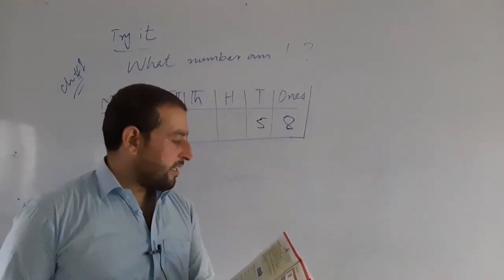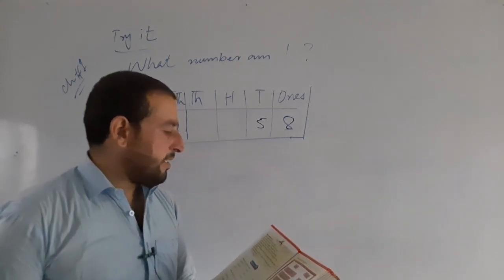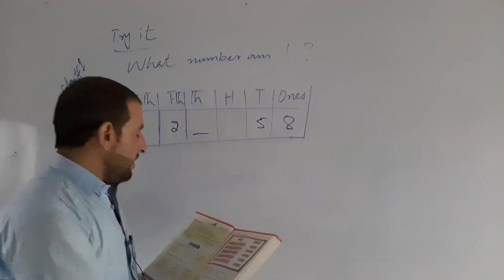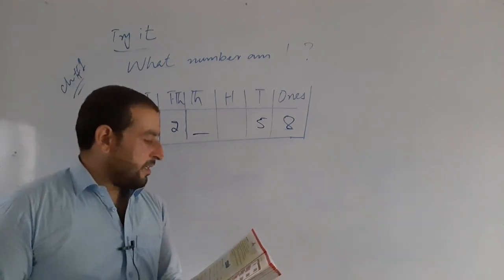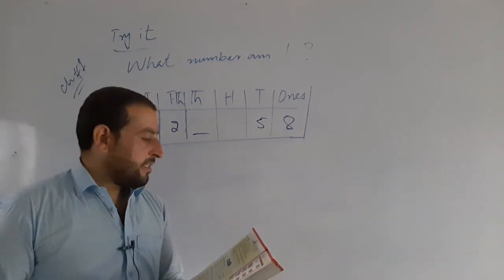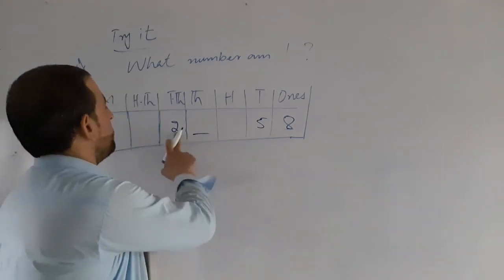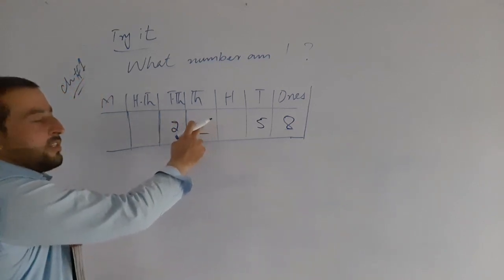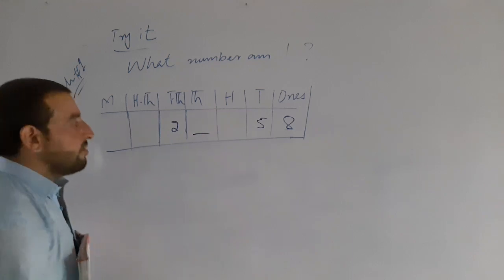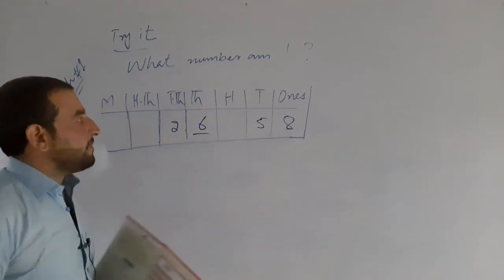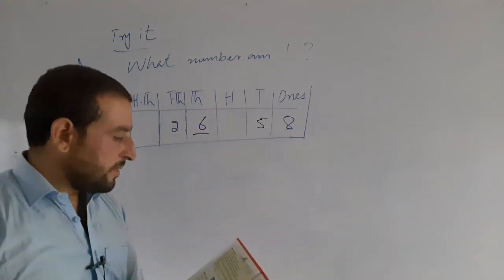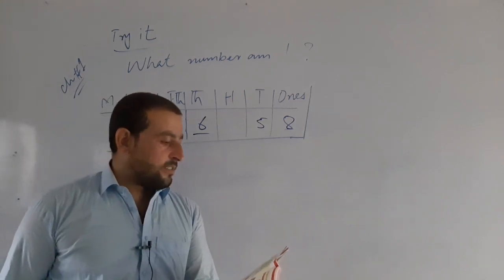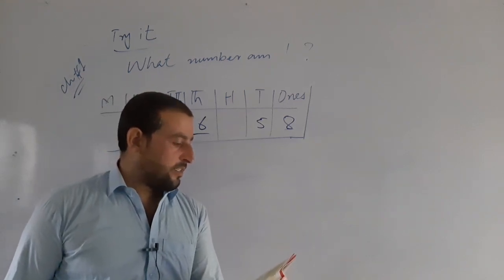My 10,000 digit is 3 times my 10,000 place digit. My greatest place value digit is the sum of my 10s digit and my 10,000 digit.